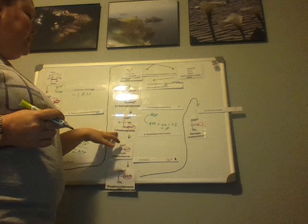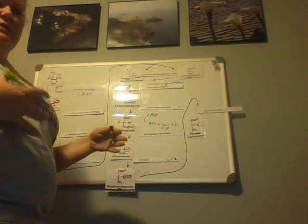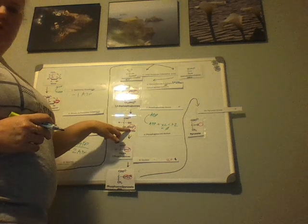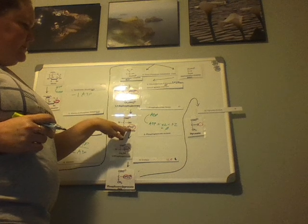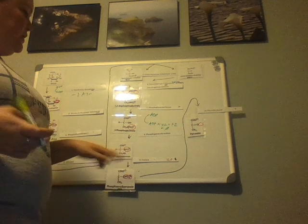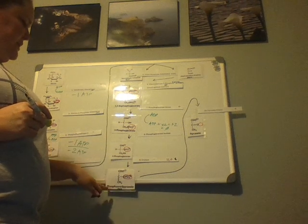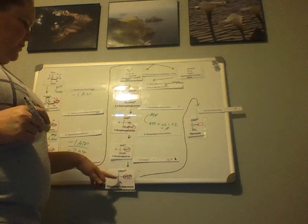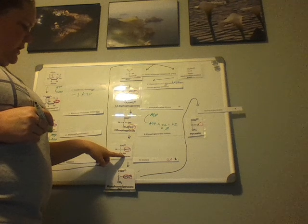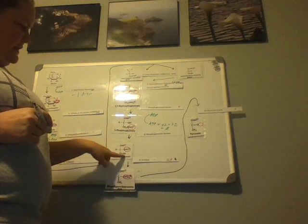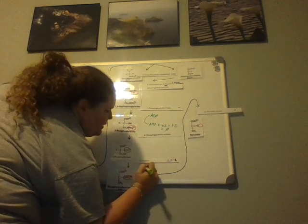The next step takes our 3-phosphoglycerate and uses phosphoglycerate mutase. A mutase shuffles the structure — you can see the phosphate group on the side is bumped up to the middle. The mutase moves the phosphate from the 3-carbon position up to the 2-carbon position, which is more stable. Then we have enolase, which works on the 2-phosphoglycerate and turns it into phosphoenolpyruvate. In this reaction, a water molecule is produced.